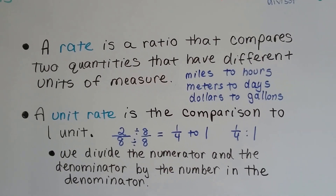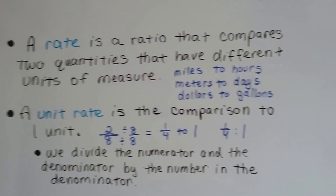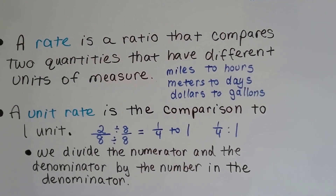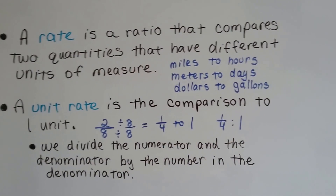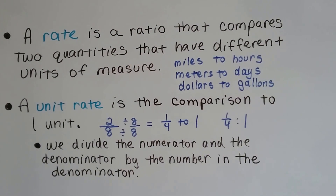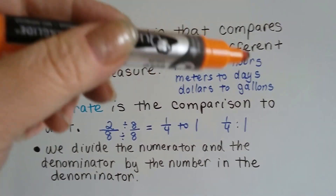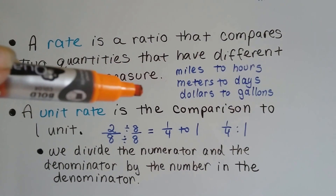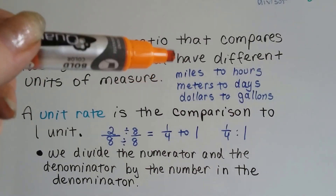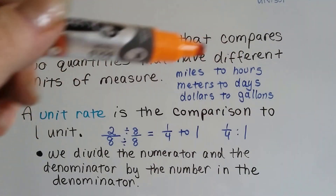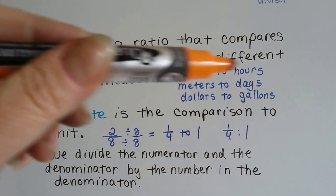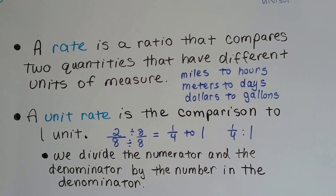So it's still a ratio, but it's comparing miles to hours, meters to days, dollars to gallons. Two different types of measurements. So it's not measuring feet to inches — it's literally measuring miles to hours or dollars to gallons, completely different types of measurements.